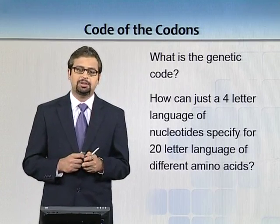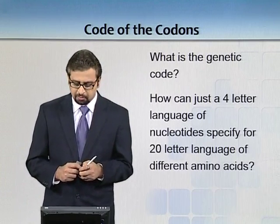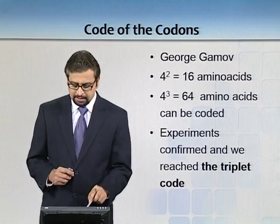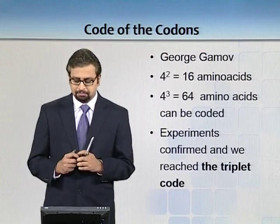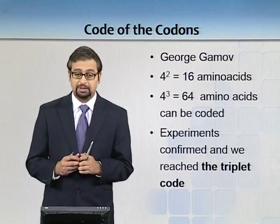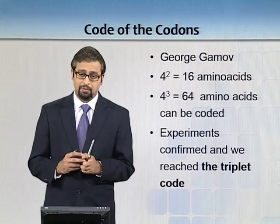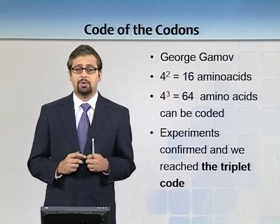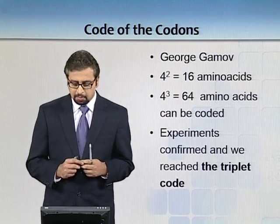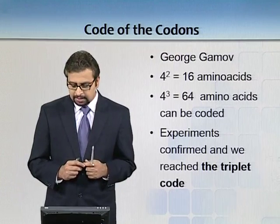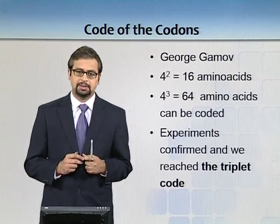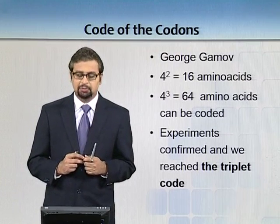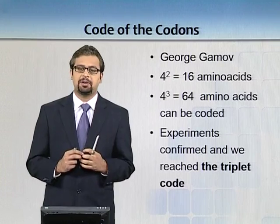George Gamow, a Russian scientist, first raised this question and started to work out combinations. If we do 4 × 4, it's 16 — so if bases are read in pairs, you only get 16 combinations, not enough for 20 amino acids. But if it were a triplet, then it would be 64 combinations. That's interesting, and ultimately experiments confirmed we reached the triplet code.